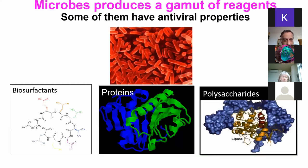We produce these using green surfactants shown on the bottom left. There's one green surfactant called surfactin, and these are produced by microbes. Microbes can produce the gamut of reagents — proteins, polysaccharides — and they are much less harmful than bleach and other surfactants used even for washing.